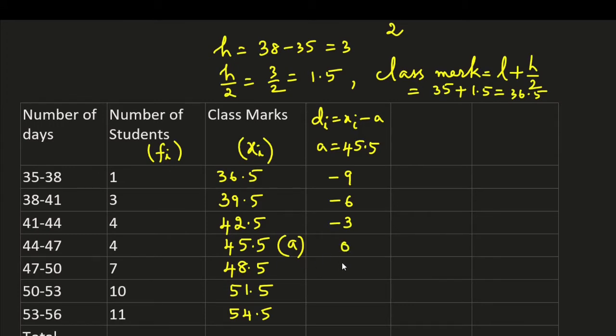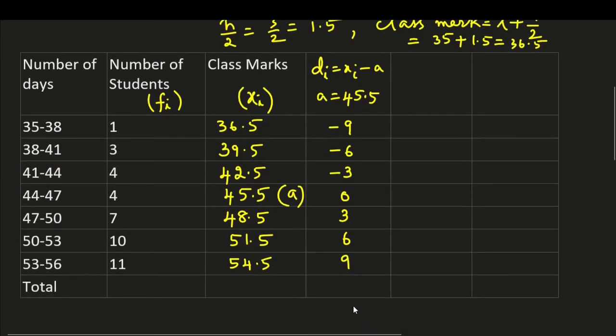0 here. Here 3, 6, 9. These deviations are multiples of 3. So let us take h is equal to 3. And find ui values. ui is equal to di by h.